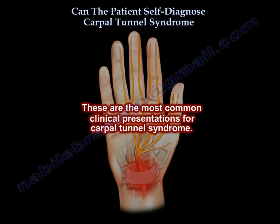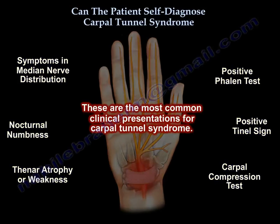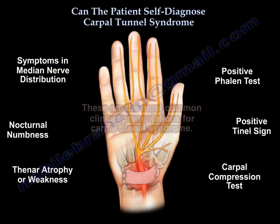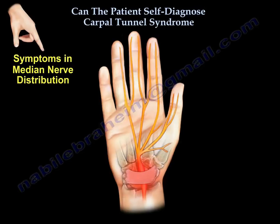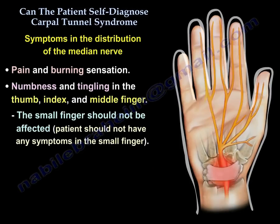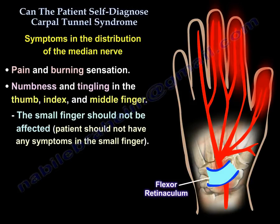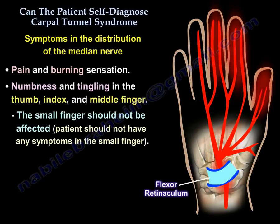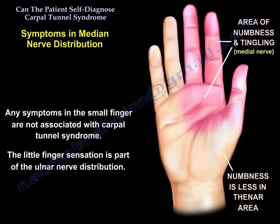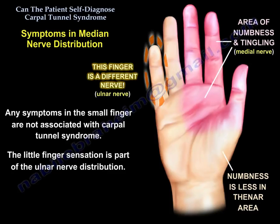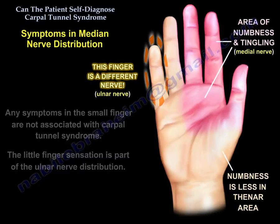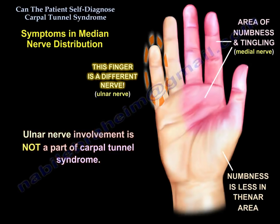These are the most common clinical presentations for Carpal Tunnel Syndrome. Symptoms occur in the distribution of the median nerve — pain and burning sensation, numbness and tingling in the thumb, index, and middle finger. The small finger should not be affected; any symptoms in the small finger are not associated with Carpal Tunnel Syndrome, as the little finger sensation is part of the ulnar nerve distribution.